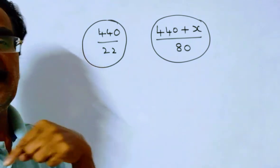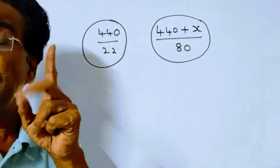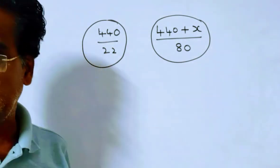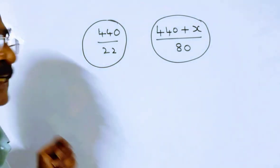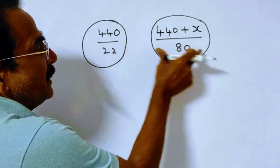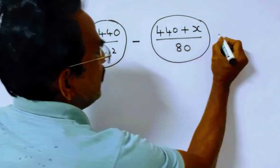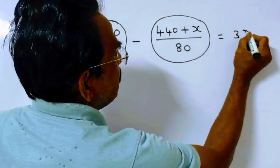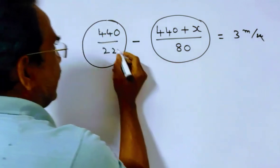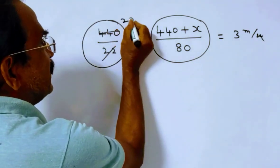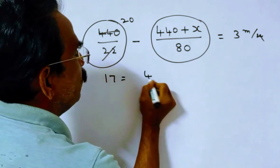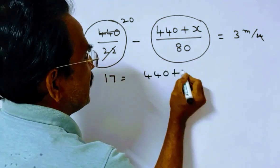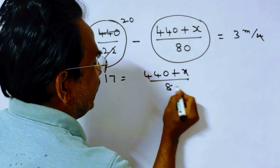According to the question, this speed is 3 meters per second more than the earlier speed. This speed is increased by 3 meters per second, so this minus this equals 3 meters per second. So 20 minus 3 equals 17, which equals 440 plus X upon 80.